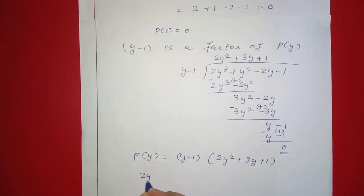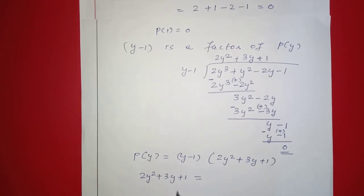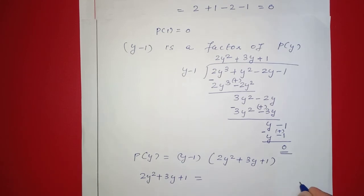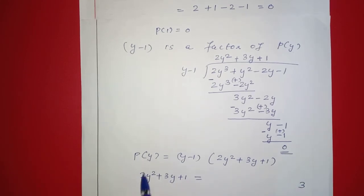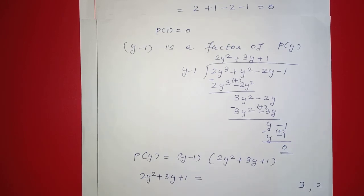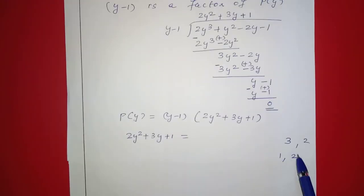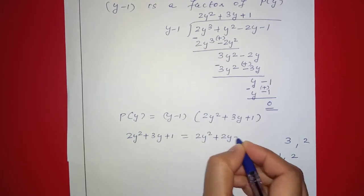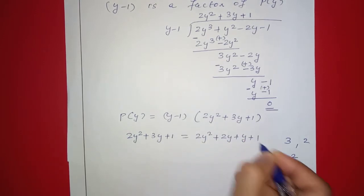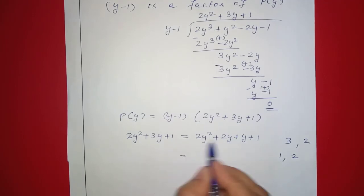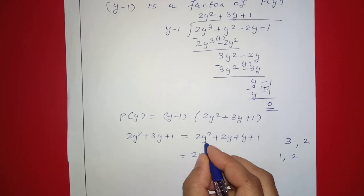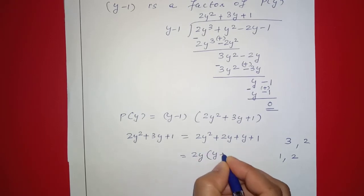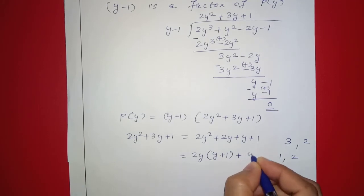So P of y equals y minus 1 times 2y squared plus 3y plus 1. For the degree 2 quotient, we split the middle term 3y. Multiply 2 into 1 equals 2. We need factors that multiply to 2 and add to 3. So 2y squared plus 2y plus y plus 1. Split as 2y squared plus 2y plus y plus 1.